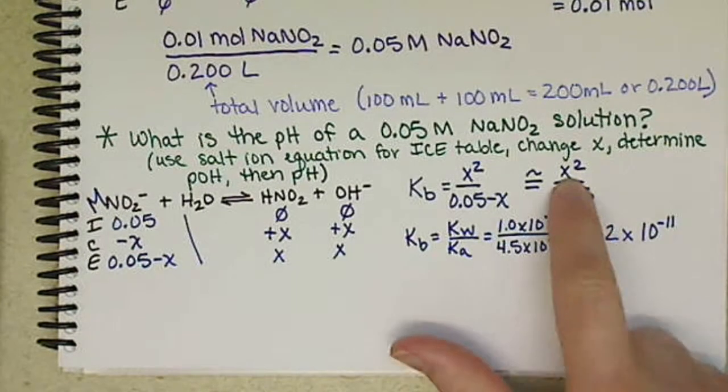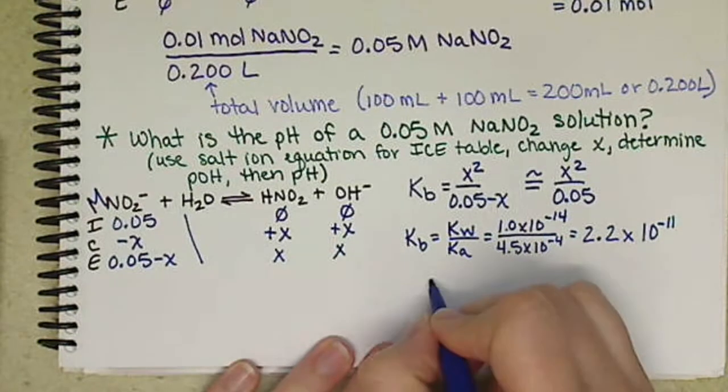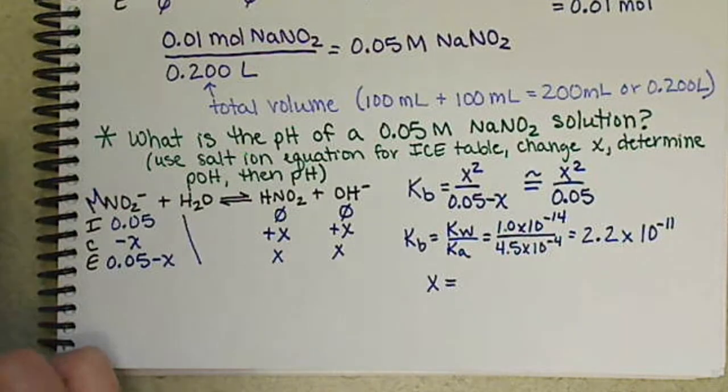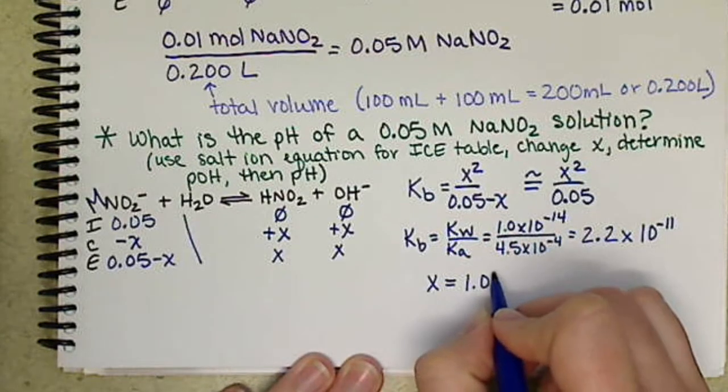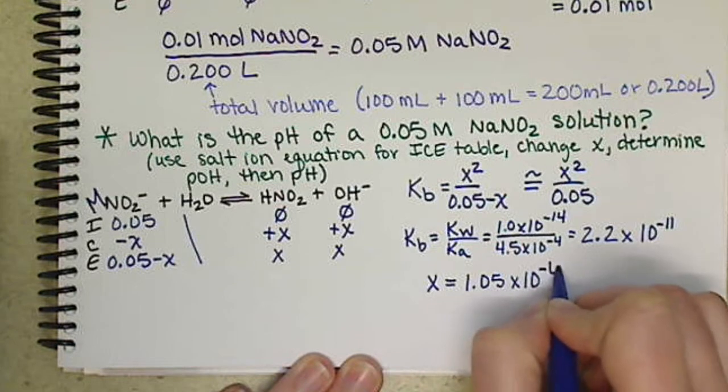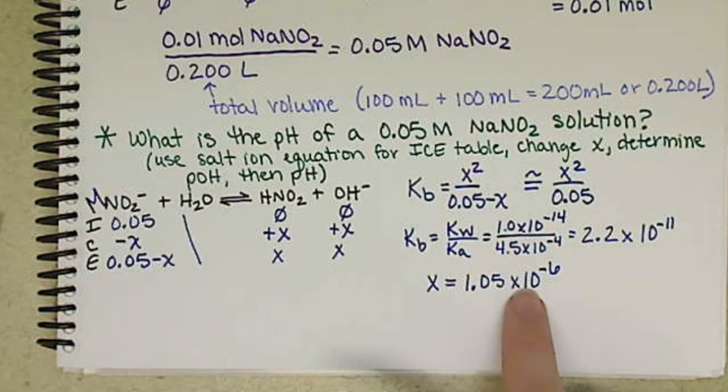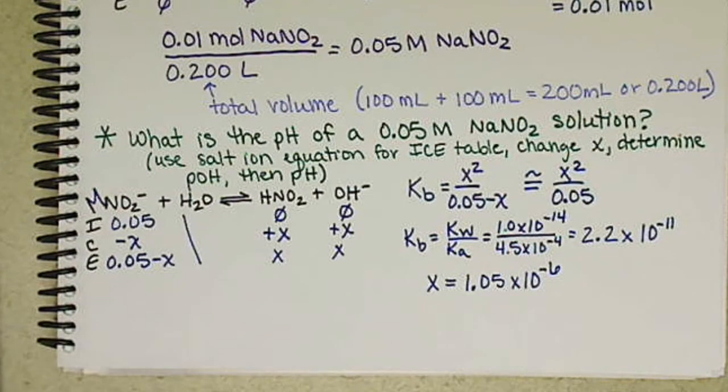So now we can have x squared divided by 0.05 equal to 2.2 times 10 to the negative 11. So x becomes 1.05 times 10 to the negative 6. 10 to the negative 6 divided by 0.05. Definitely approximation is okay.